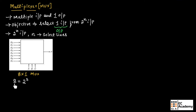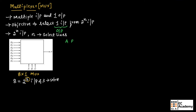For the 8×1 multiplexer, it has 8 inputs, which we can write as 2 to the power of 3 inputs. Since n equals 3, it has 3 select lines. With 3 select lines, we get 8 combinations of input.